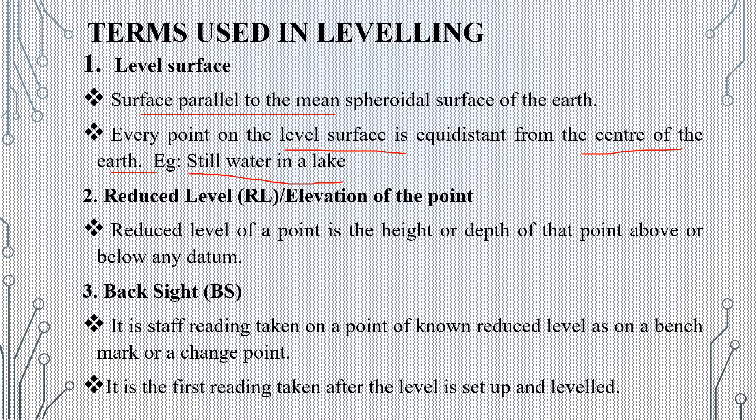Next, we have reduced level. The reduced level of a point is the height or depth of that point above or below the datum. That is what we call the reduced level.